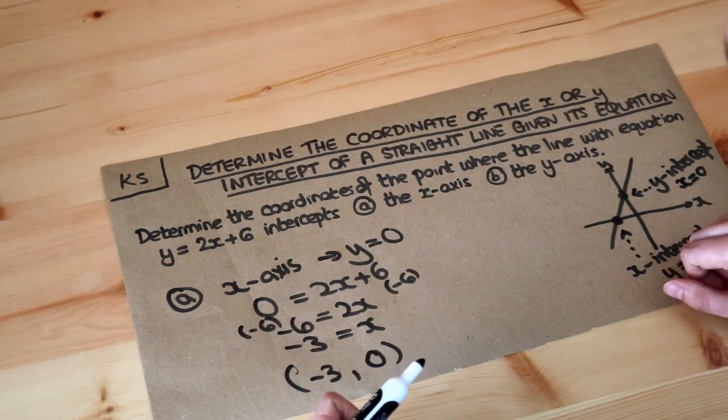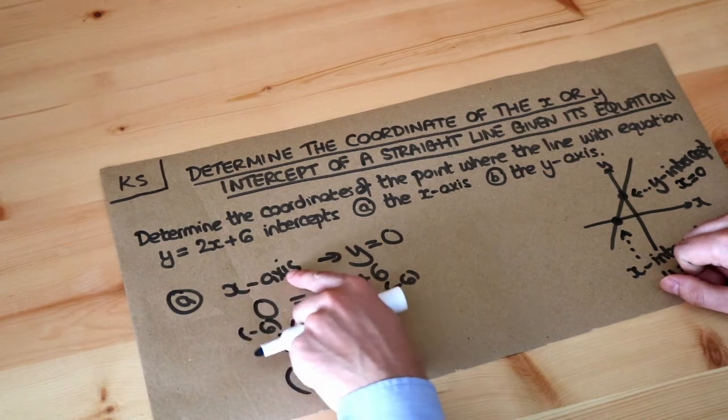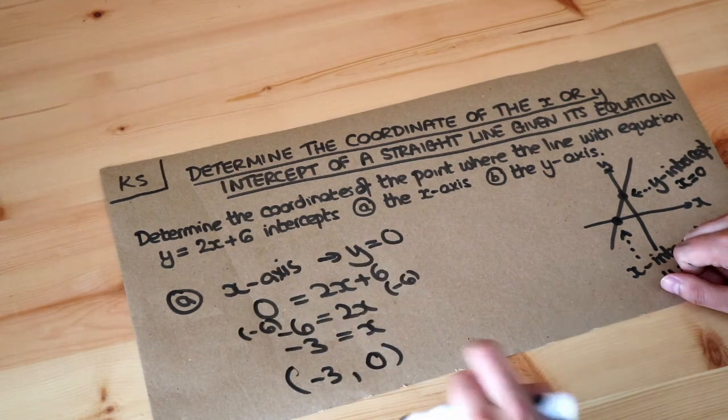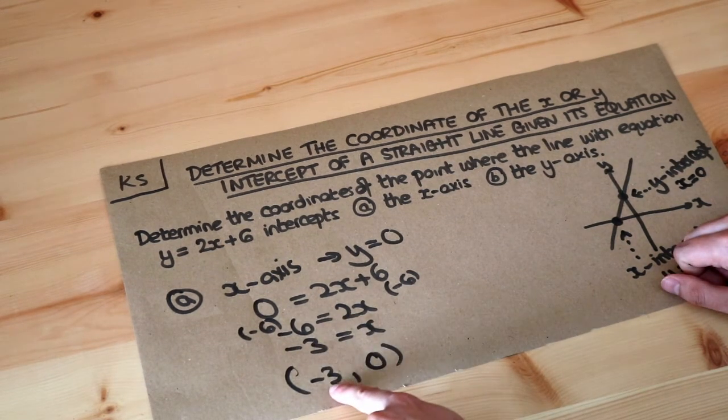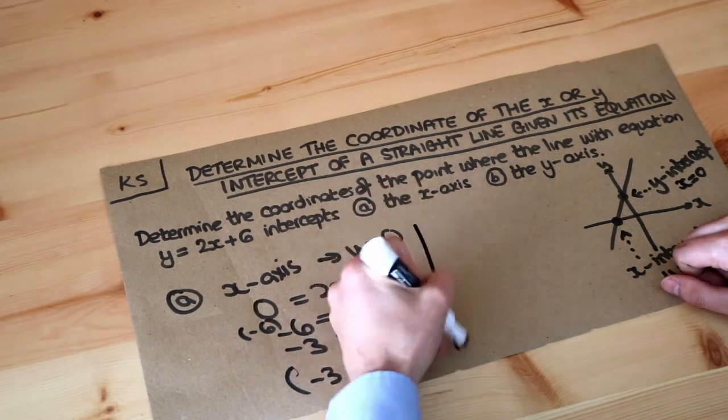Now there's two common errors that students make. When they're trying to find the x intercept where the line cuts the x axis they make x zero rather than y zero. And the other mistake they make is that they get this far to say that x is minus 3 and they accidentally put the minus 3 in the y position and not the x position. So that's another common error.